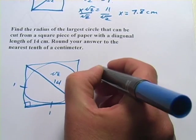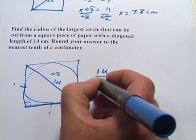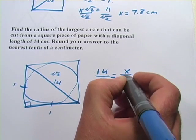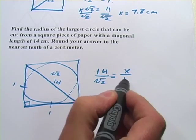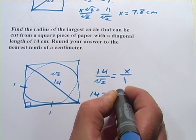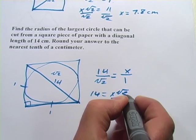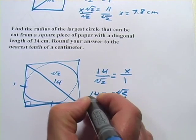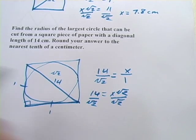So the ratio is 1-1 square root of 2. So let me set up a proportion, 14 is to the square root of 2 as x is to 1. And we'll cross multiply again and I get 14 equals x times the square root of 2. Divide both sides by the square root of 2.